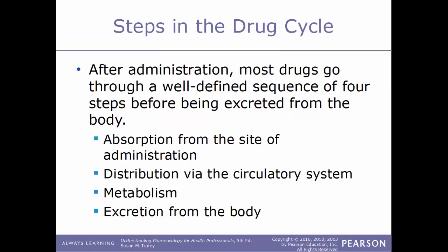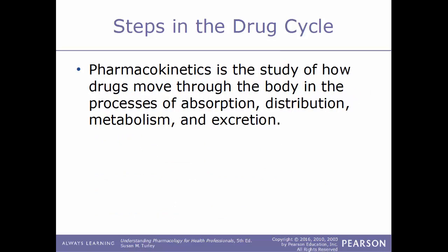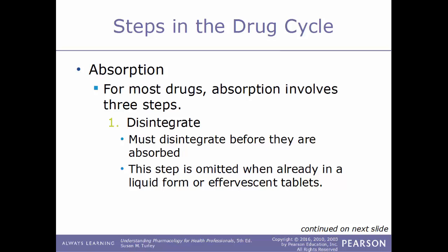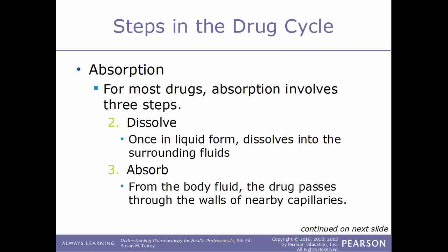After administration, most drugs go through a well-defined sequence of four steps before excretion: absorption from the site of administration, distribution via the circulatory system, metabolism, and excretion. The term pharmacokinetics is the study of how drugs move through the body in these processes. The first step, absorption, involves movement of drugs from the site of administration into the bloodstream. For most drugs this involves three steps: disintegrate, dissolve, and then be absorbed through capillary walls into the circulatory system. The disintegration step is omitted if the drug is already liquid or in an effervescent tablet.